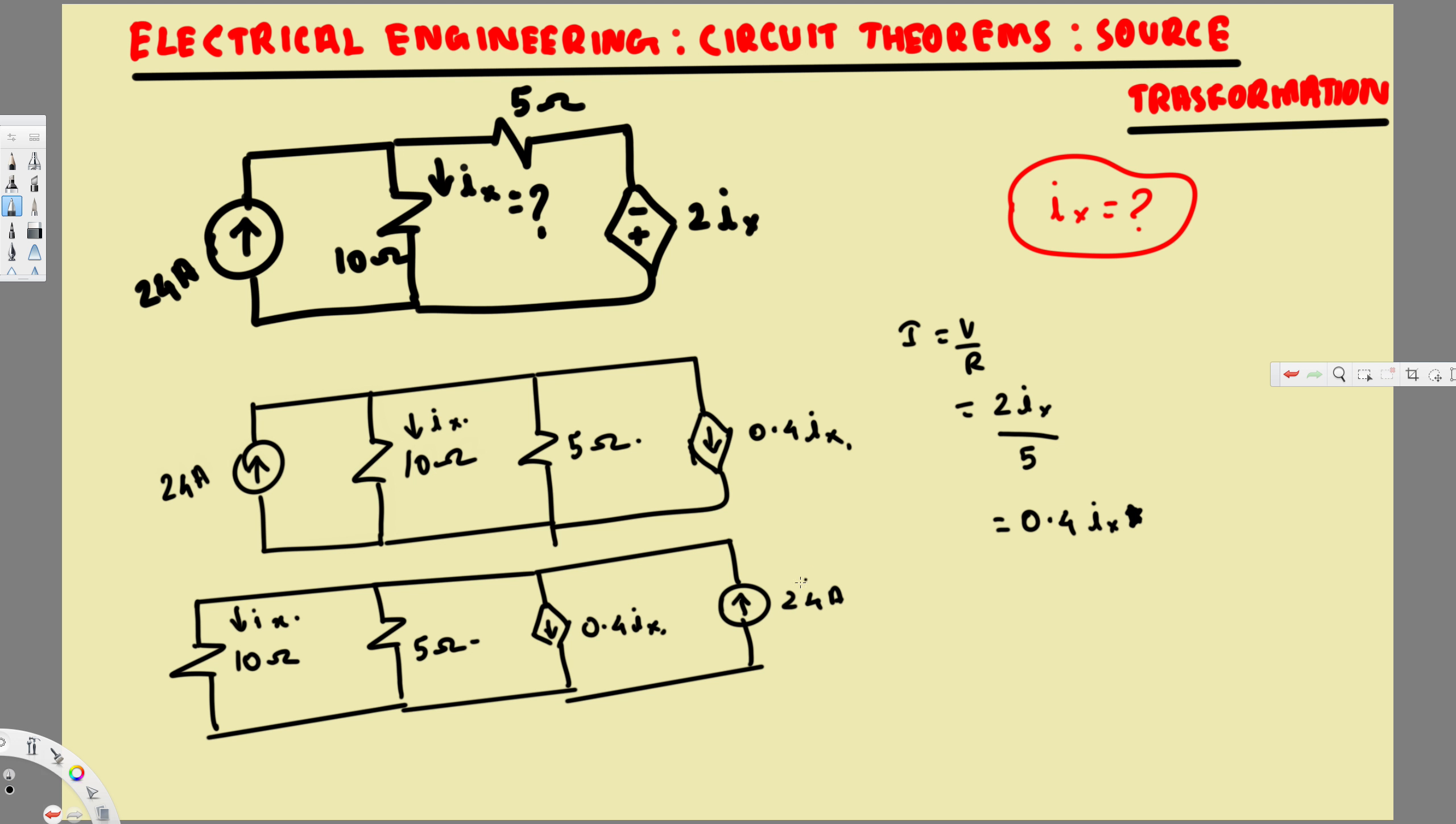Now you can see this 24 amp is upward and 0.4Ix is downward, so the total current is going to be I total equals 24 minus 0.4Ix.